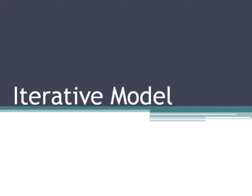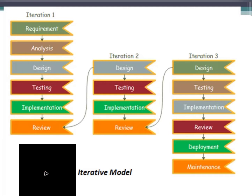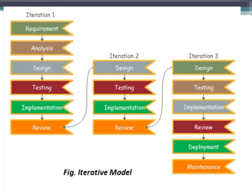What is an iterative model? It is basically a combination of multiple iterations to make the software perfect. We start with some software specifications and develop the first version of the software. This version is known as an iteration. After the first iteration, if there is a need to change the software, then a new version of the software is created with a new iteration.